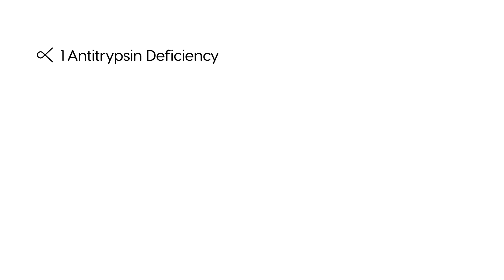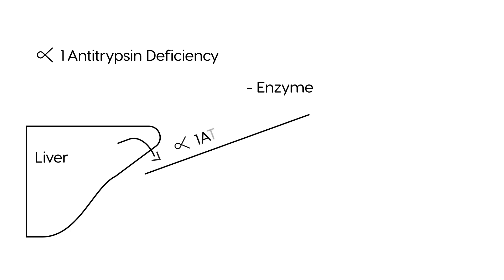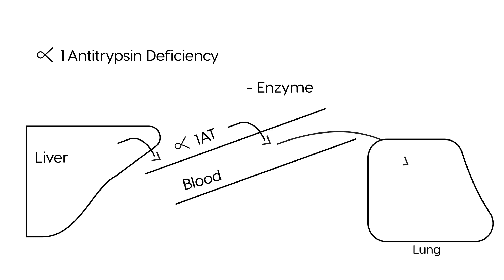Alpha-1 antitrypsin is an enzyme and it is produced in the liver. Once it's produced by the liver, it goes into the bloodstream — I'll abbreviate it as AAT — and then once it gets into the blood, it travels to the lung.